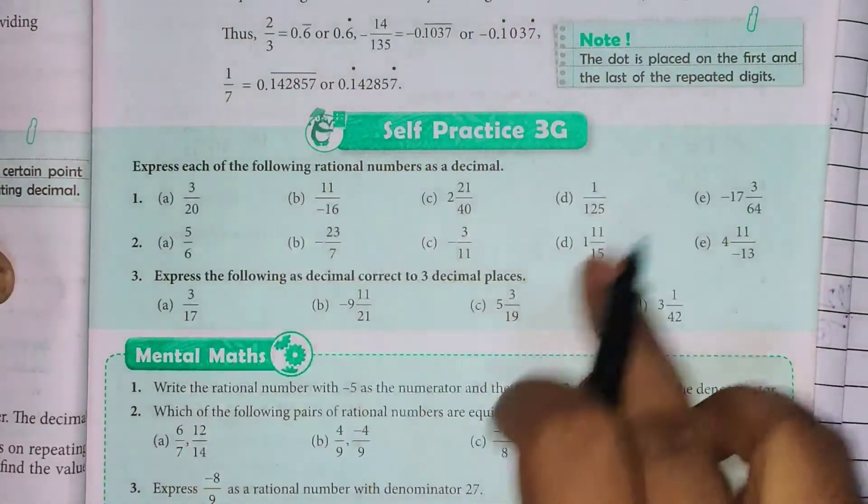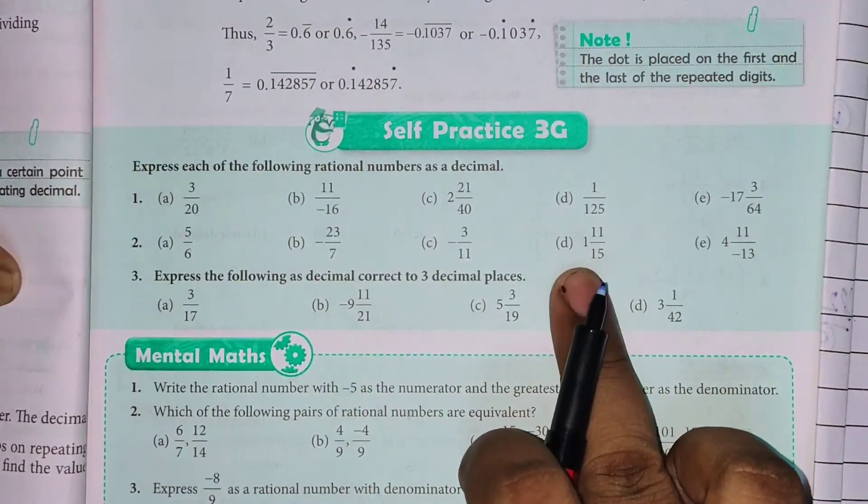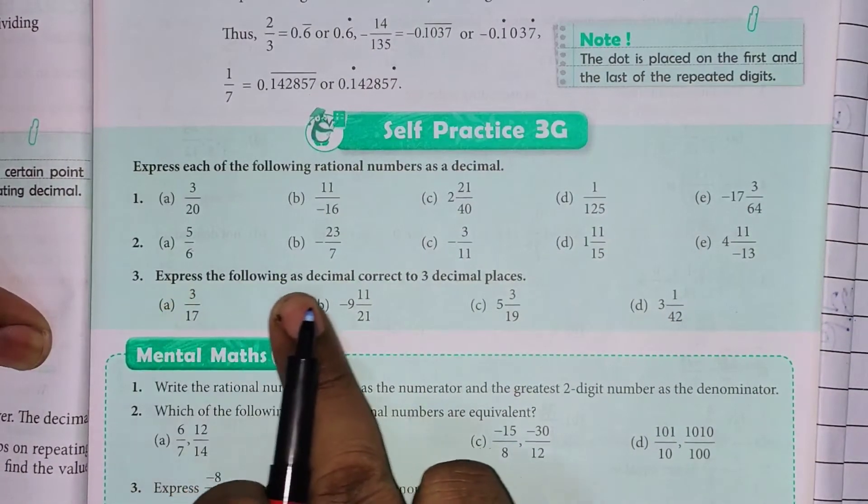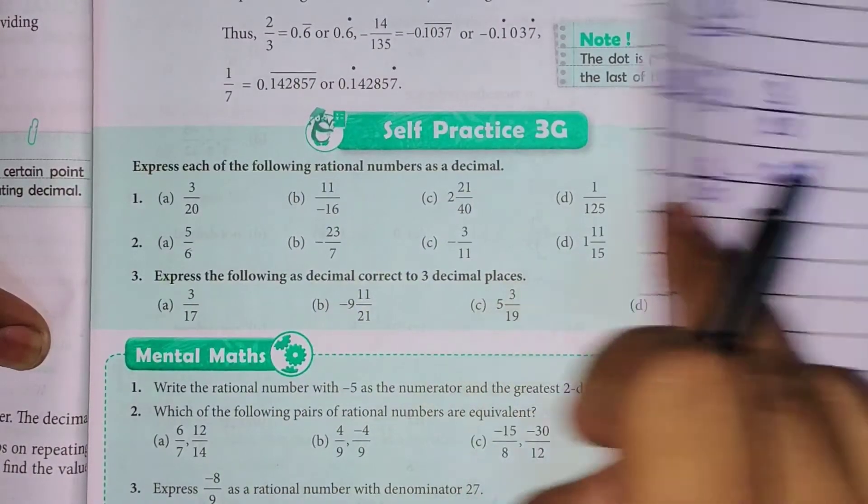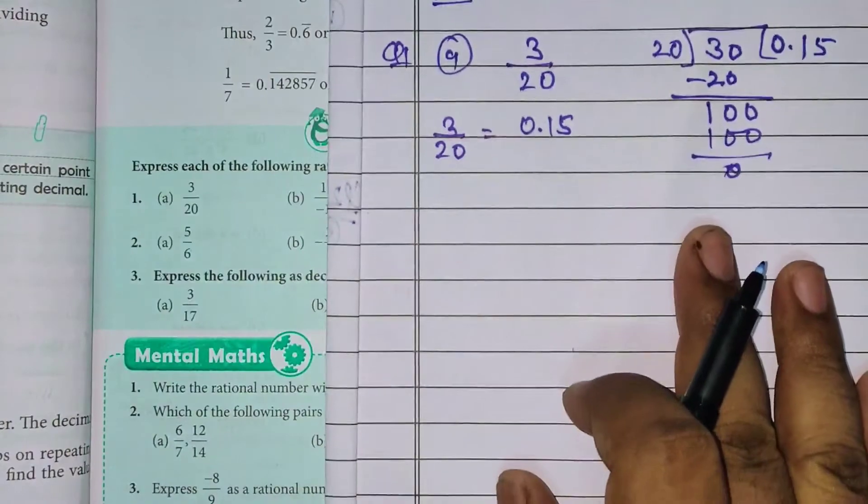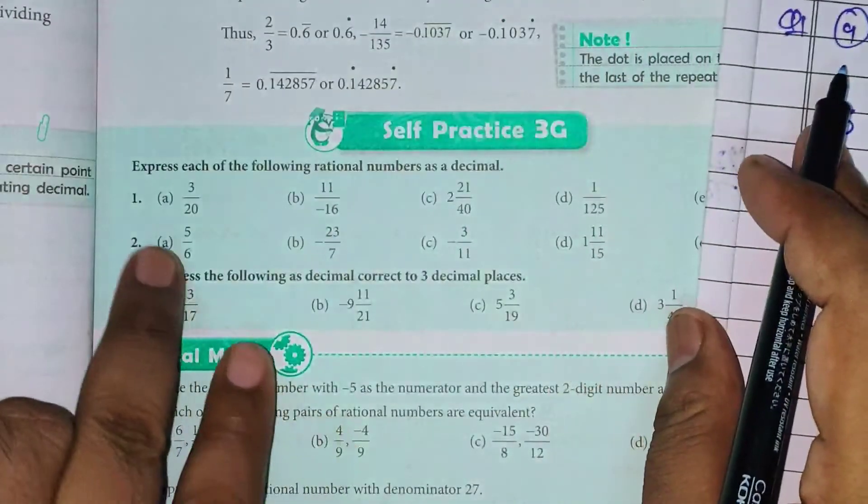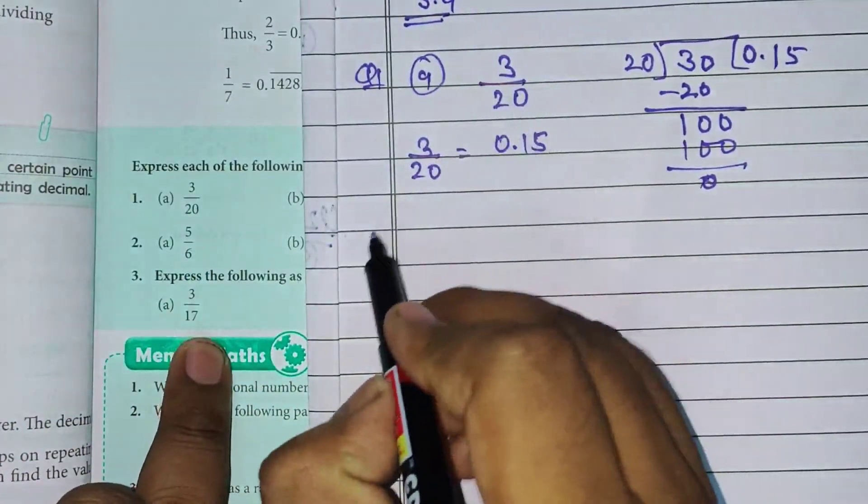Aisai hii aapko in sabhi ko divide kar lena hai. Jou mix fraction wala hai, pahla usai improper fraction me karna hai. Aar phir aapko divide karna hai. Question number second wala hai bachos. Express the following as decimal correct to 3 decimal places. Isko hume 3 decimal places tuk write down karna hai.